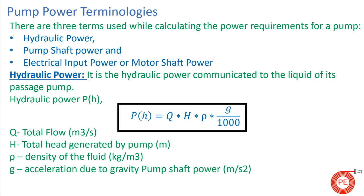Moving on to pump power terminologies, which is the main topic of this video. While calculating pump power, we come across three terms: hydraulic power, pump shaft power, and electrical input power. Hydraulic power is not directly used as a standalone term in industrial processes, but without it we cannot calculate pump shaft power or electrical input power. Hydraulic power is the power that is communicated to the fluid during its passage through the pump — essentially the power transferred from the pump to the fluid.